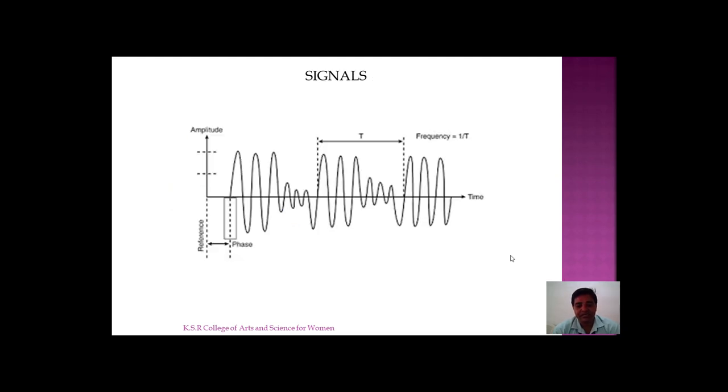The next concept is signals. All the frequencies that are converted into signals are used for wireless communication. Wireless involves two types of signals - it might be analog as well as digital. Based upon the type of data that you are going to transmit, signals may vary.